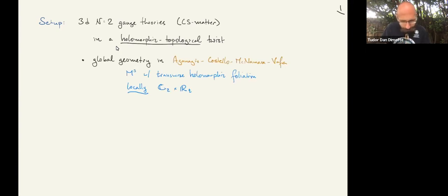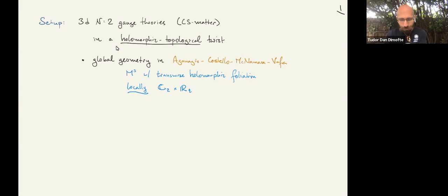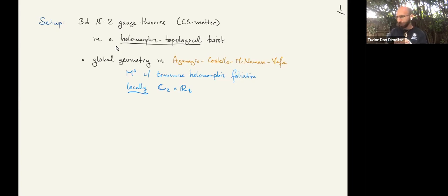Just to give some background, the global geometry of this twist was discussed a few years ago by Aganagic, Costello, McNamara, and Vafa. This sort of twist makes sense on three-manifolds that have a transverse holomorphic foliation structure, which just means locally they look like a holomorphic direction times a real direction, and then that gets globalized. This is also related to topological strings with coisotropic branes in that paper, which I will not discuss at all.